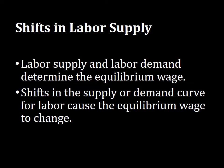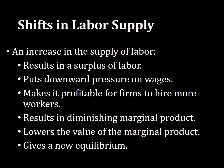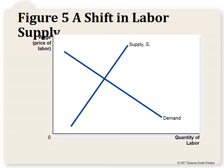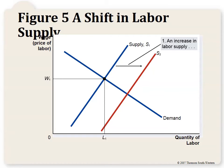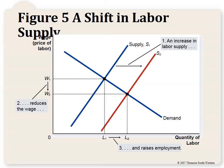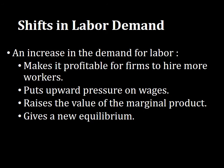Labor supply and demand determine the equilibrium wage, and shifts in either curve cause the equilibrium wage to change. For example, suppose a new law school opens, increasing the supply of lawyers. This shifts the labor supply curve to the right in the market for lawyers, causing the wage to fall while the overall quantity of labor employed in the market increases — more workers overall, but each earning less.